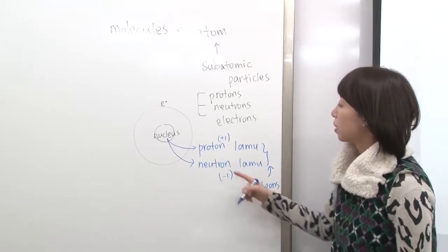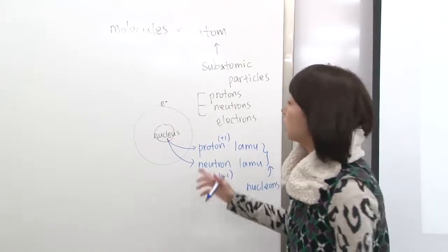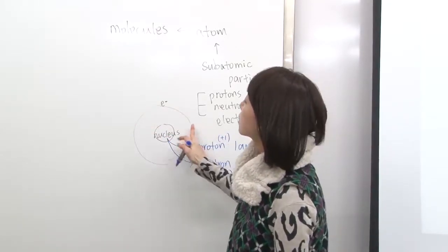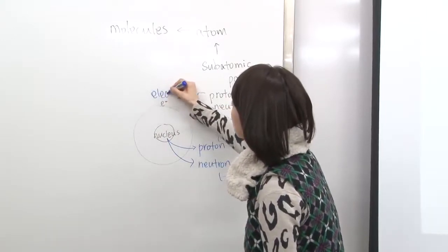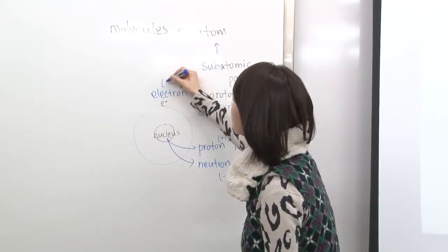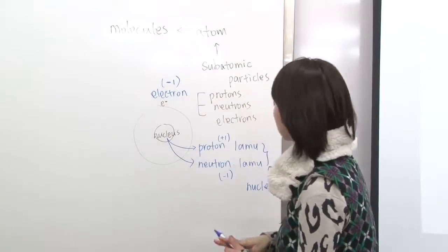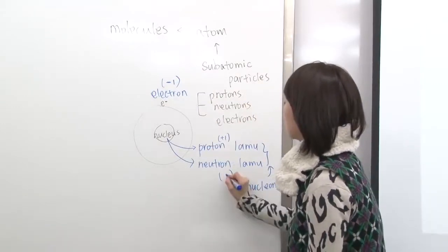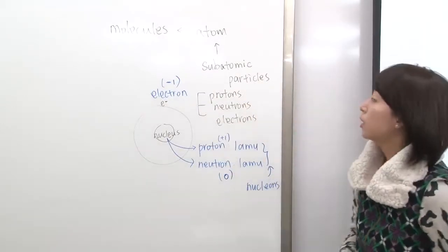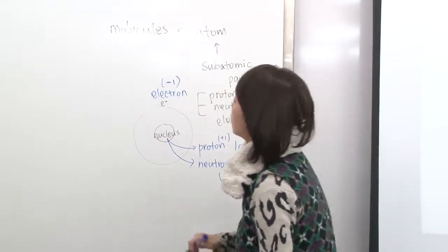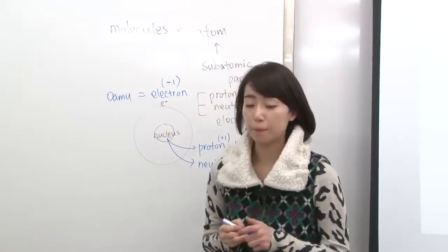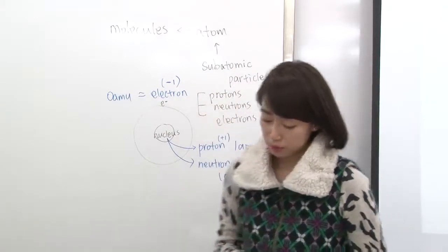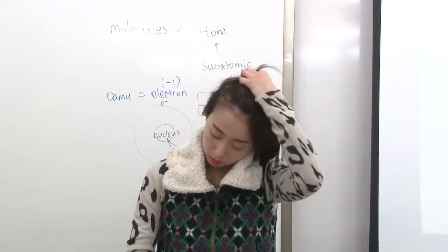Nucleon means particle inside the nucleus. And electrons are outside the nucleus, actually orbiting around, and the charge is negative 1. Sorry, the charge on neutron is zero, neutral. And electron is negative 1. If you were to talk about the mass of electron, this is almost zero amu. So these are the three subatomic particles.